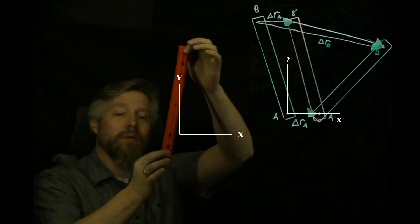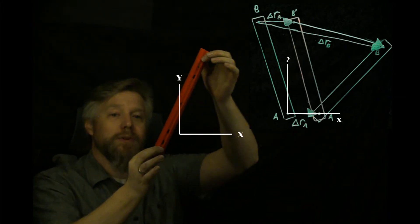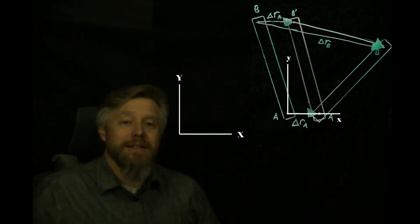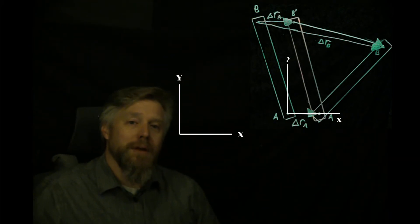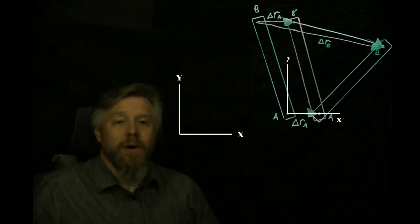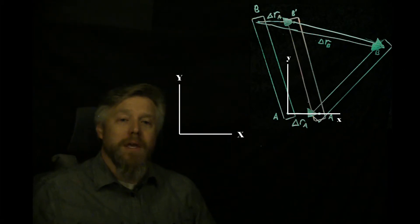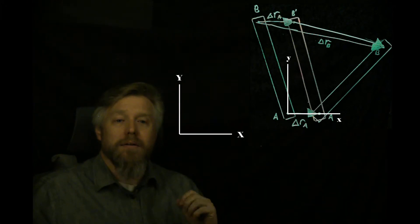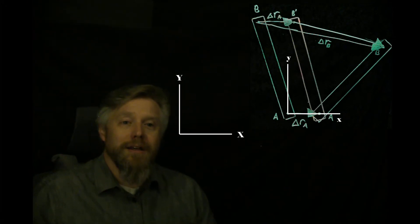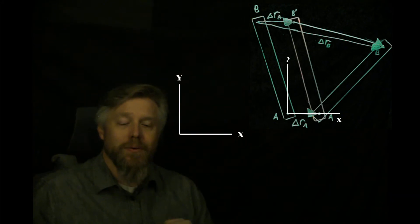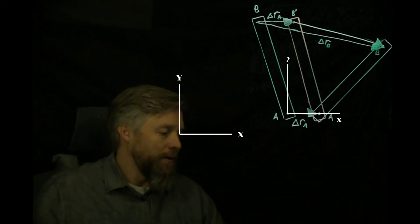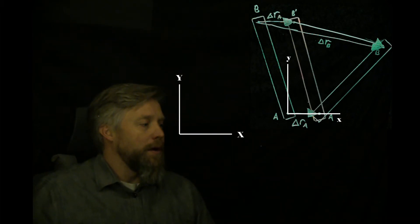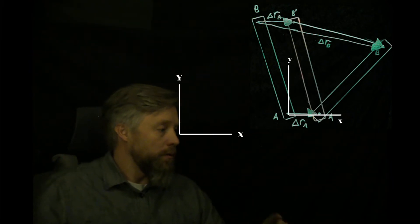That's what causes it to be pure rotation. If B was sliding toward A or A toward B, it's no longer pure rotation inside our local coordinate axis system. We need a mathematical way to take what's happening in a local coordinate axis system and translate it into our fixed global coordinate axis system. That's what we're going to do today.